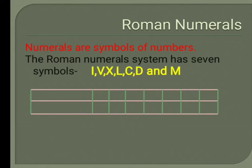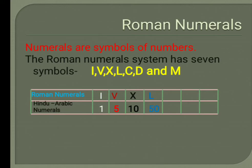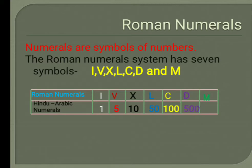Here in the table, we have Roman numerals and Hindu-Arabic numerals. I stands for 1, V stands for 5, X stands for 10, L stands for 50, C stands for 100, D stands for 500, and M stands for 1000.